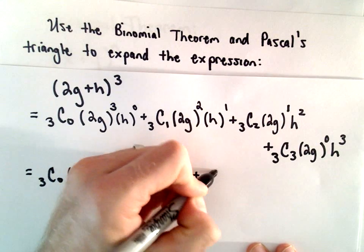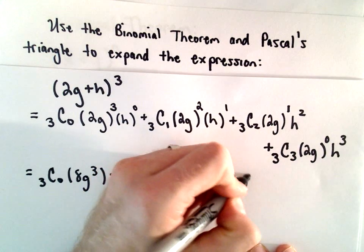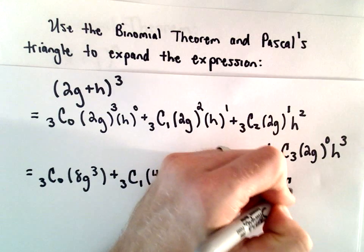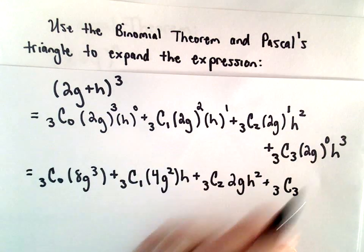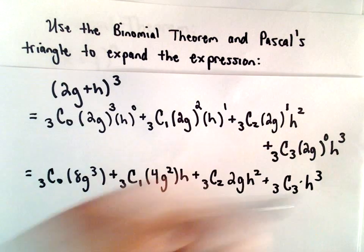Plus, we'll have 3 choose 2. In this case, we would just have 2g multiplied by h squared. And then we would have 3 choose 3. Anything raised to the zero power is 1, so we'll be left with h to the third power.